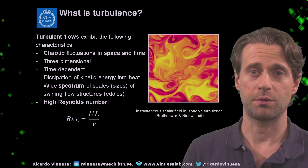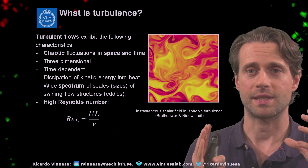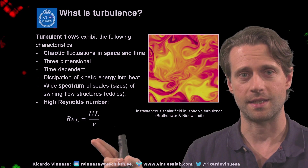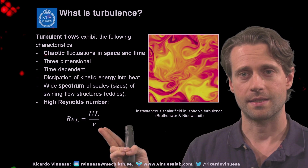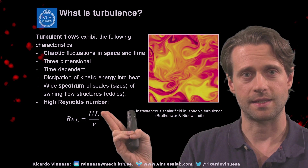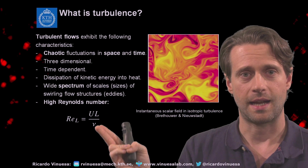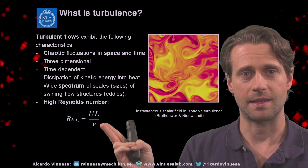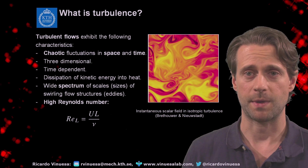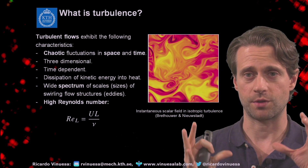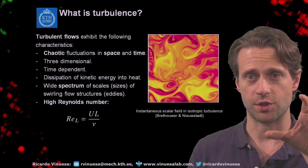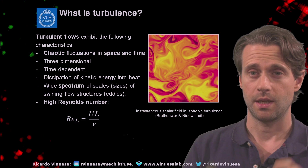What we want to also highlight is that turbulence is characterized by the Reynolds number. The Reynolds number, which you can see here, is the product of a characteristic velocity, a characteristic length, divided by the kinematic viscosity of the fluid. The kinematic viscosity of the fluid is the ratio of the molecular viscosity and the density of the fluid.